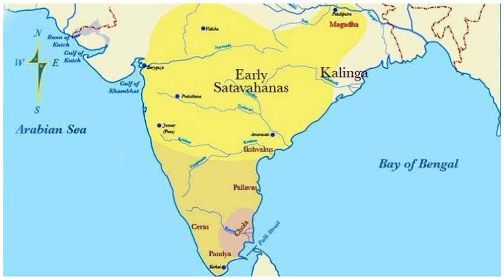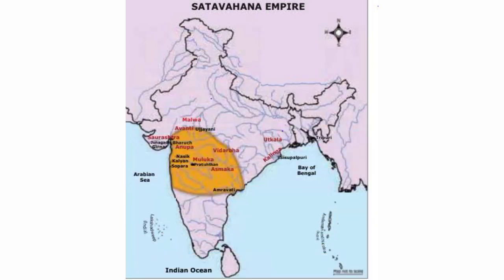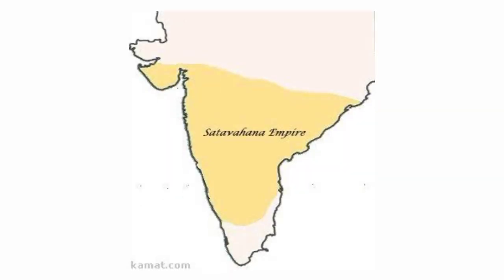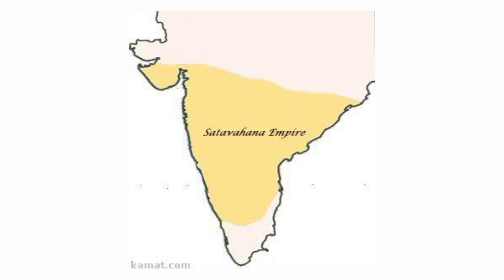In summary, the great king of this dynasty was Gotami Putra Shatakarni, and the founder was Simukha. Their capital was Srikakulam. They gave importance to all religions like Buddhism and Jainism, and also to art, architecture, literature, and education. Many great temples were built by the Shatavahanas, and their administrative system remains memorable. Those are all the important points about the Shatavahanas. If you have any queries, please comment below. Thank you for watching.